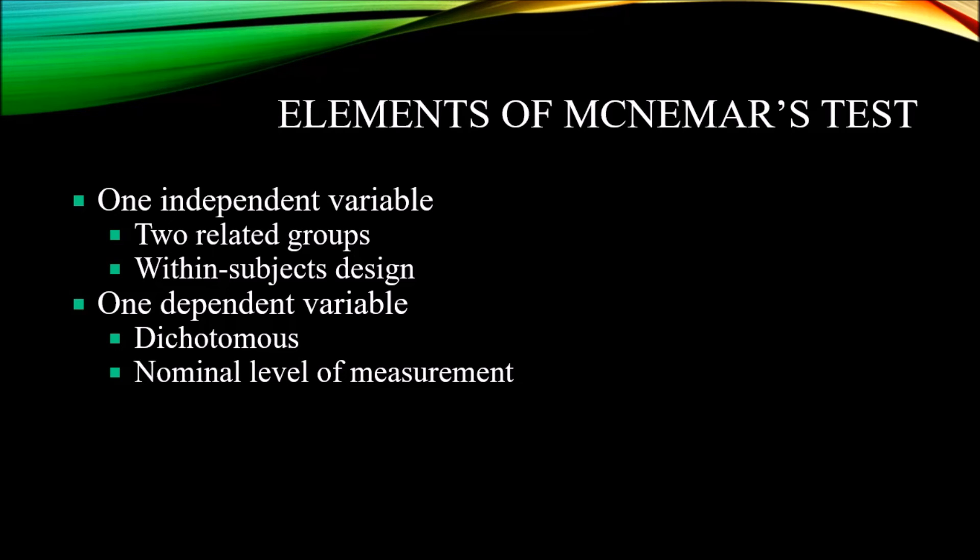For a McNemar's test, you also have just one dependent variable. It's a special case of the nominal level of measurement, referred to as dichotomous. So, it's a nominal variable with only two levels.